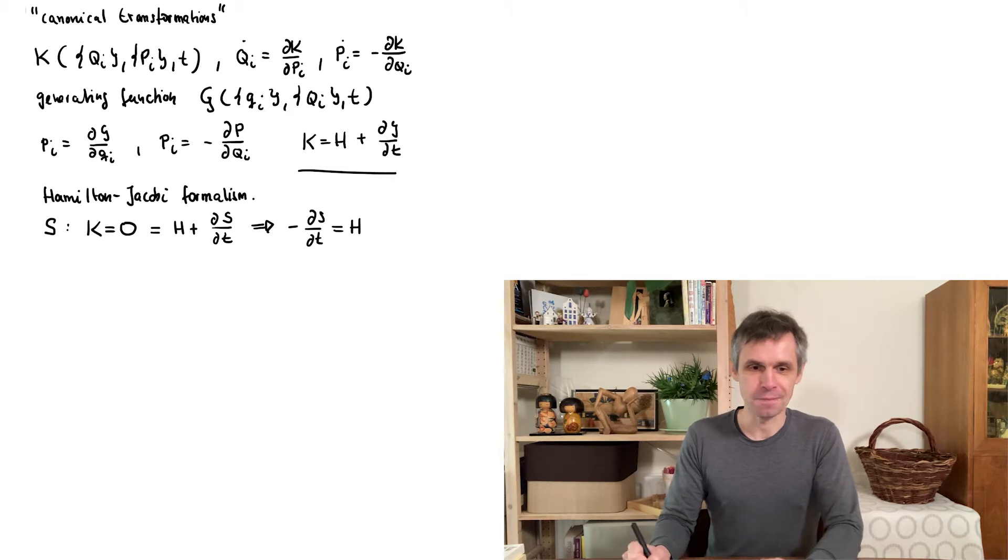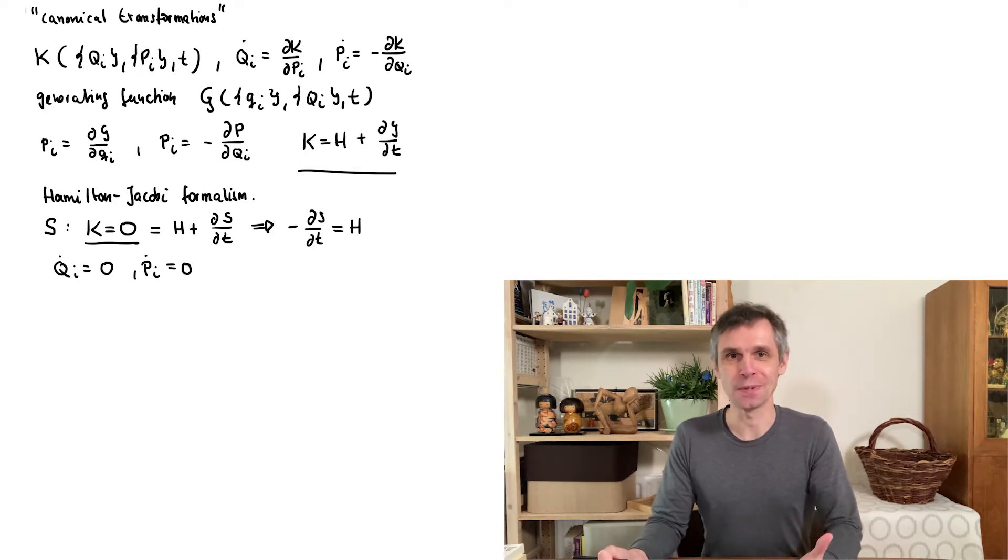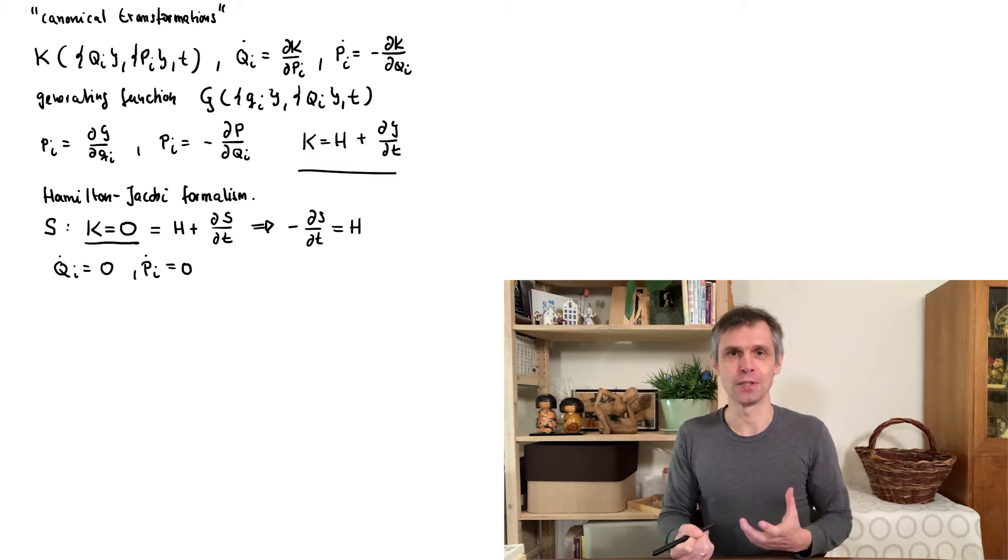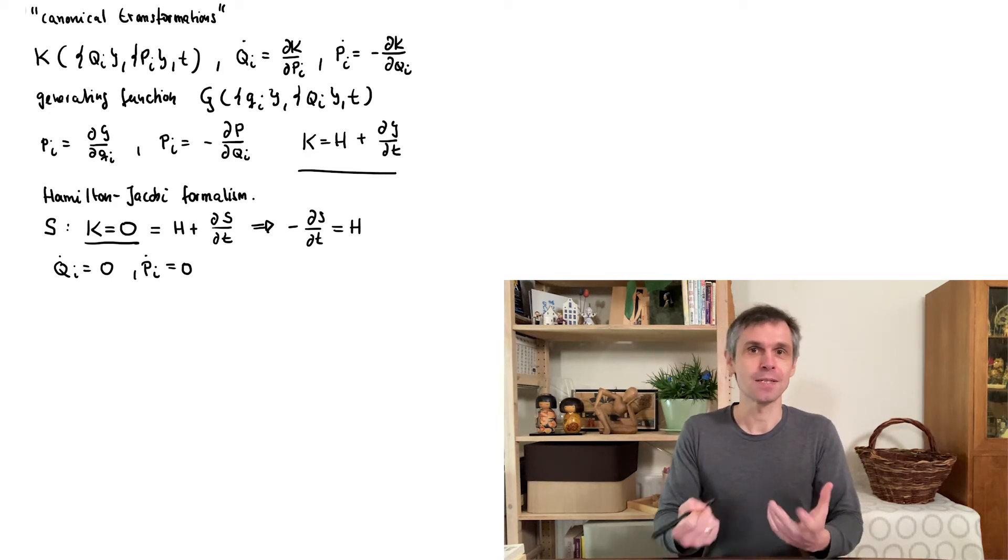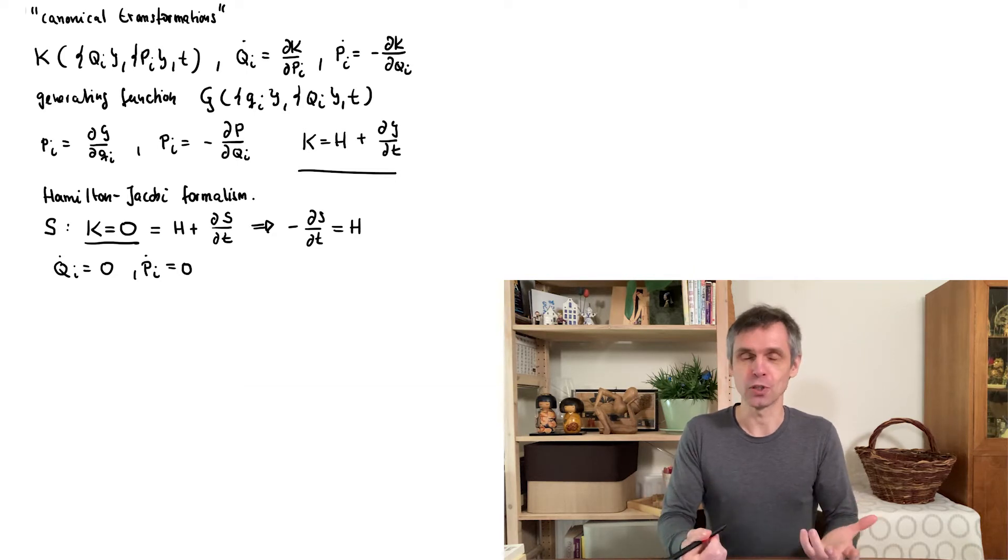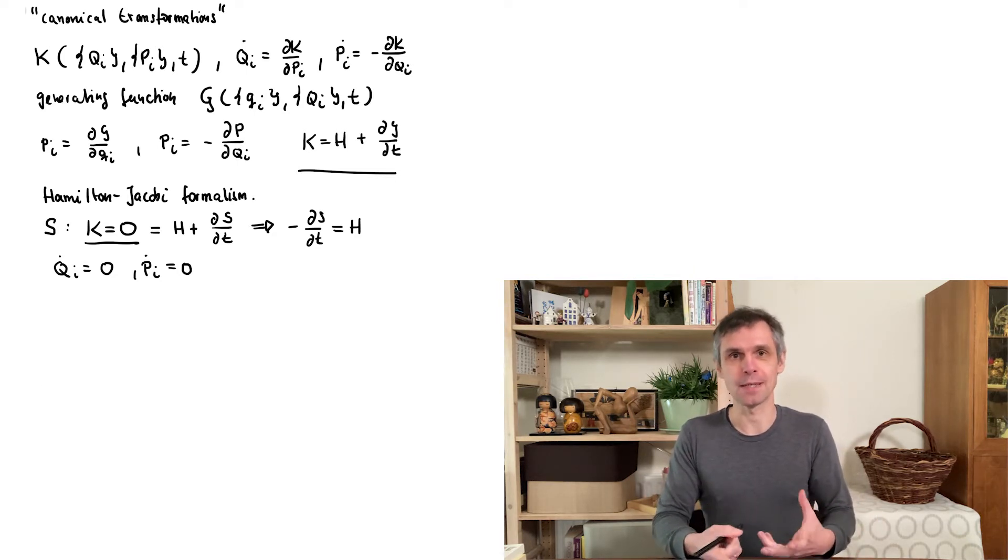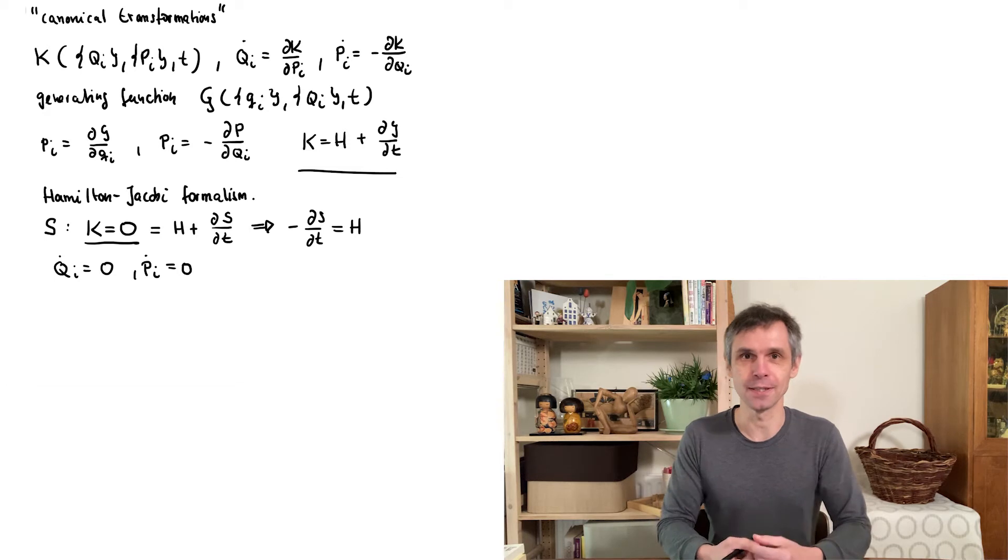Let us first see what we achieved by this. If K is equal to zero, then the new coordinates and the new momenta do not change with time, so they are constants of motion. And the most natural interpretation is that these are actually our initial conditions. And this is often what we want to do when we solve differential equations - express our time evolution in terms of the initial conditions.